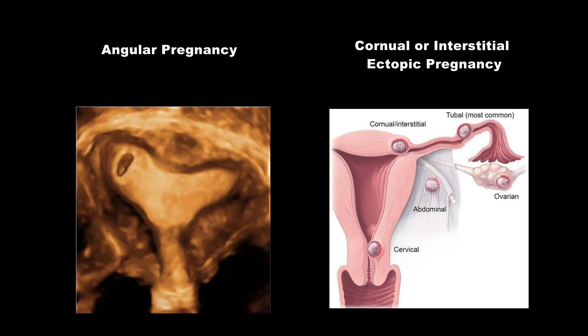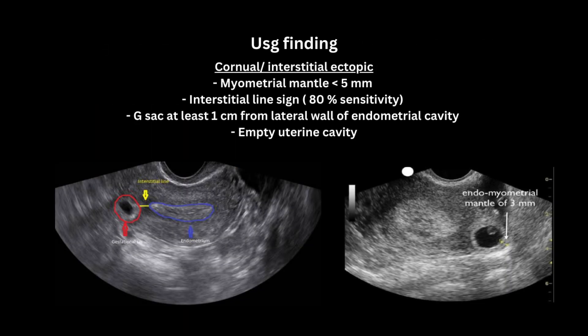It is very important to differentiate angular pregnancy from corneal or interstitial ectopic pregnancy because management is very different. Good-quality transvaginal ultrasonography can differentiate these two conditions. In corneal ectopic pregnancy, the myometrial mantle surrounding the gestational sac is often less than 5 mm. The interstitial line sign — an echogenic line between the gestational sac and the endometrial echogenic complex — has 80% sensitivity. The gestational sac is at least 1 cm away from the lateral wall of the endometrial cavity, and the endometrial cavity appears empty.